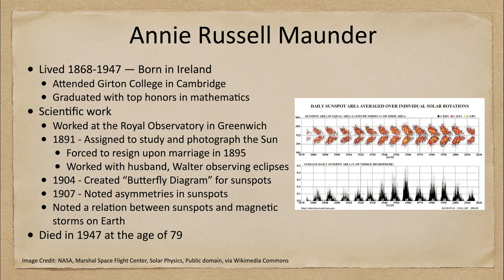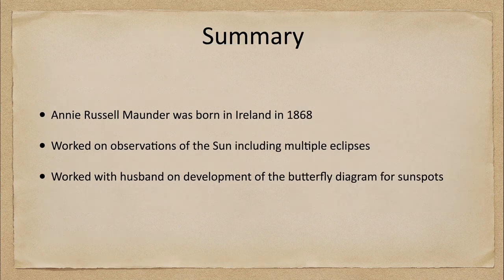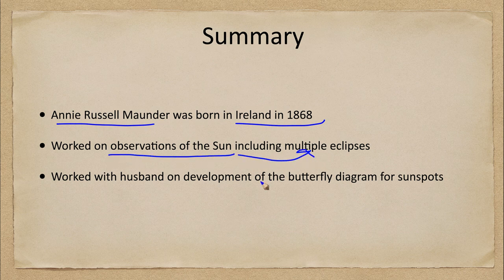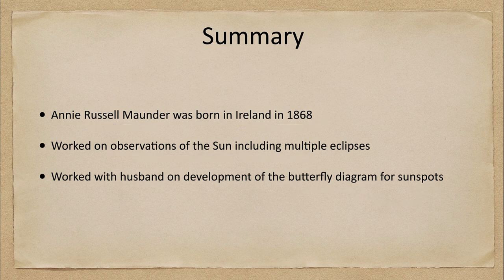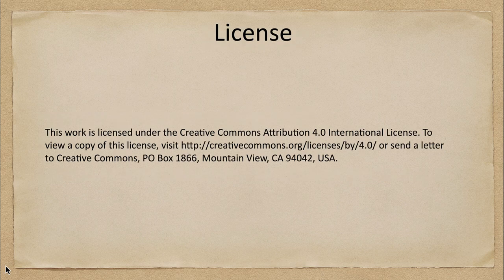To summarize: Annie Russell Maunder, born in Ireland in 1868, worked on observations of the sun including multiple eclipses, and worked with her husband Walter on the development of the butterfly diagram for sunspots — helping give us the beginnings of understanding how the sun works inside and its magnetic field. That concludes this discussion of Annie Russell Maunder. We'll be back next week to talk about another woman in astronomy, so until then, have a great day everyone and I will see you in class.